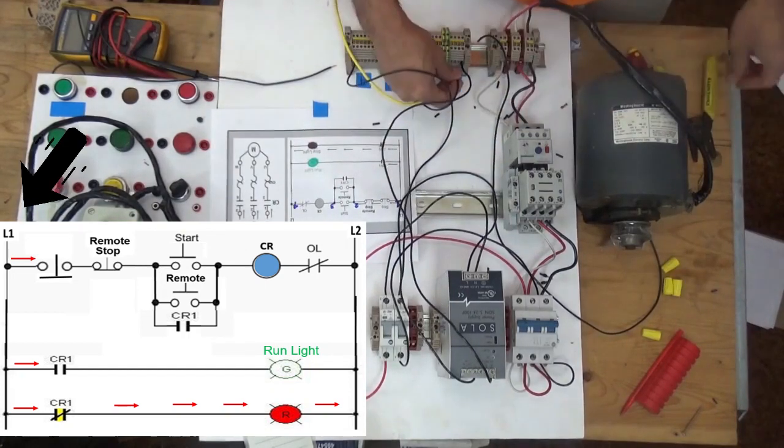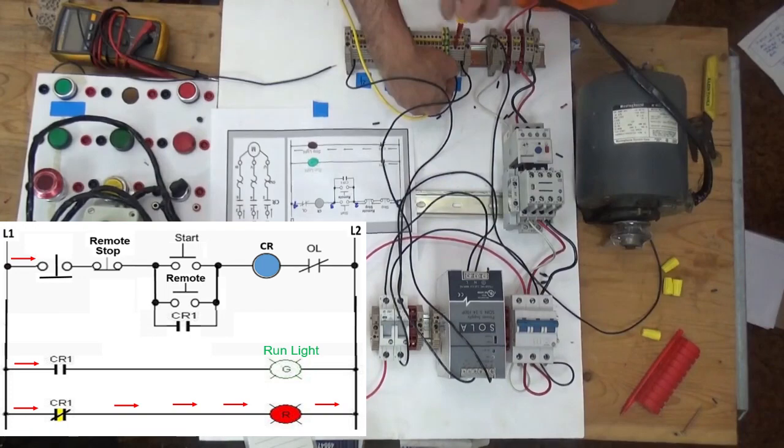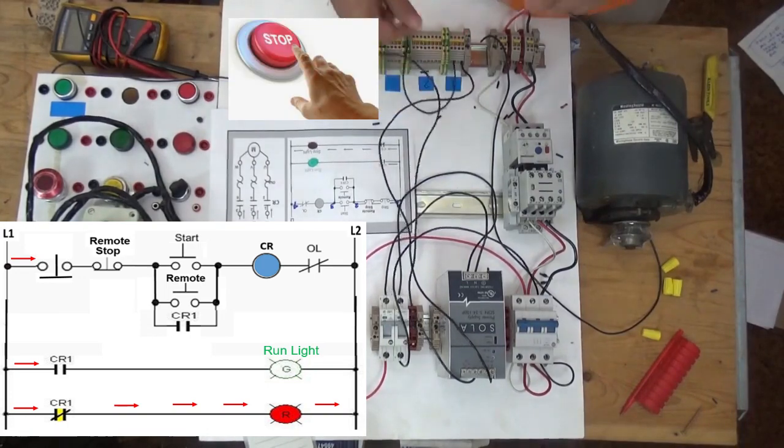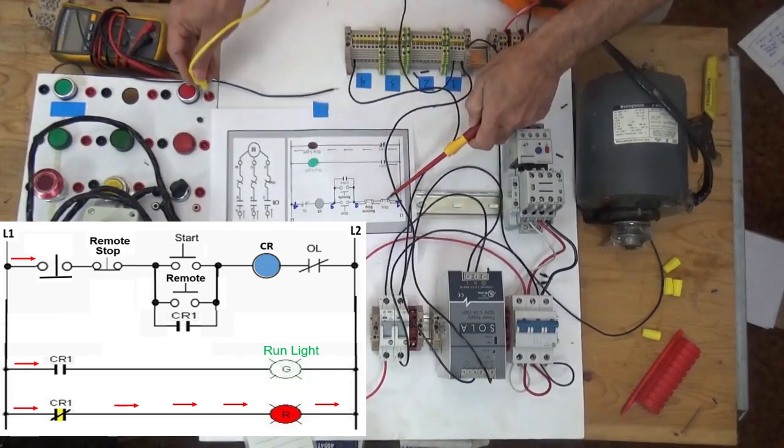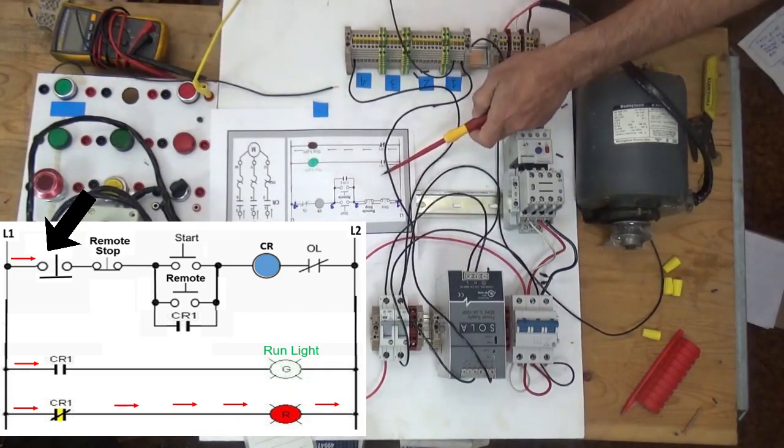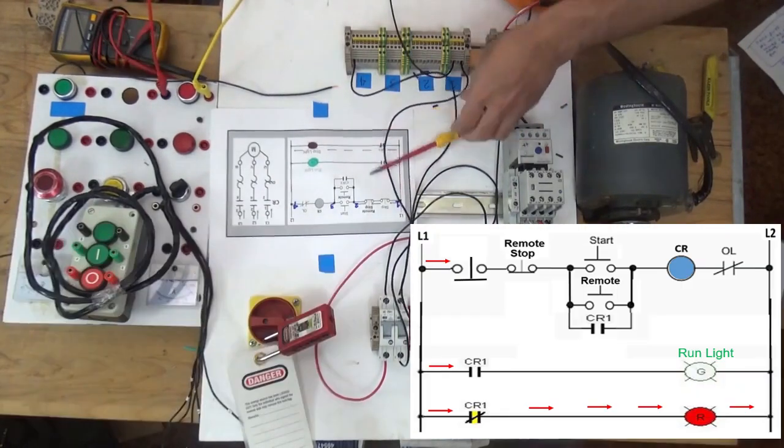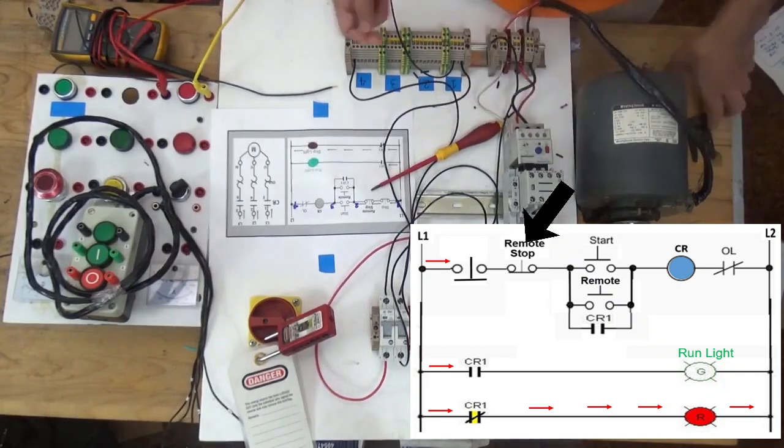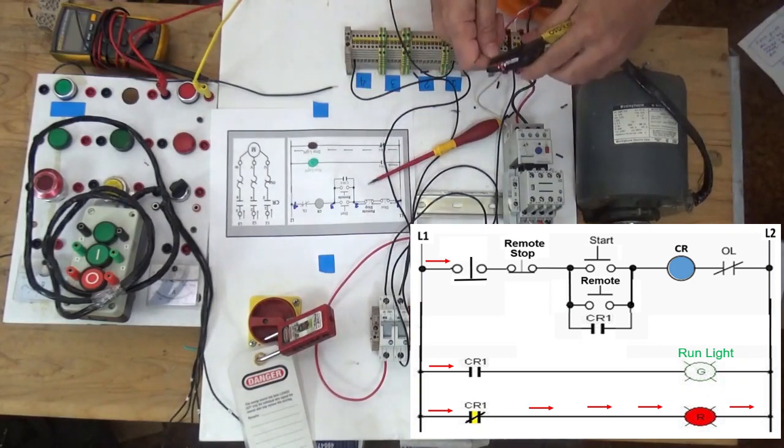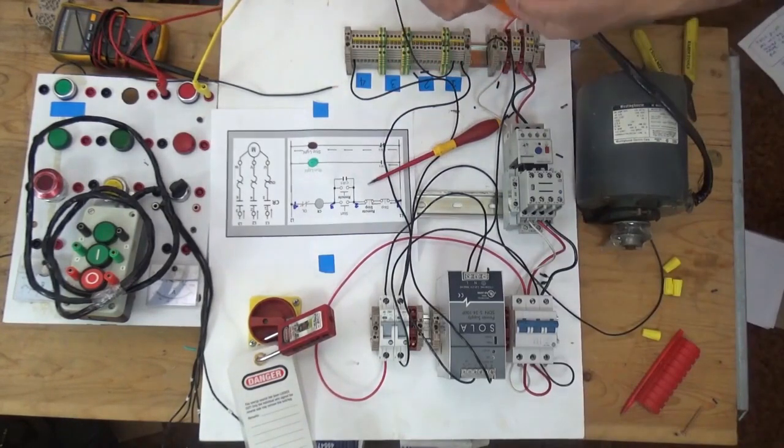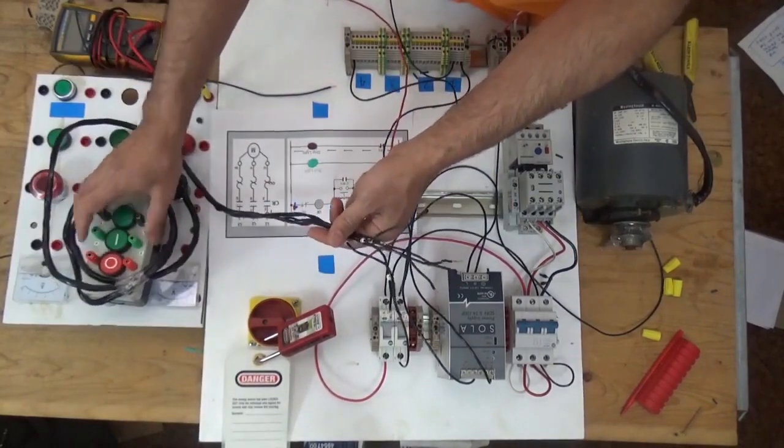So now we already have supply from our 24 volts power supply going to our terminal block. From line 1 here going to our stop push button here. Out of the stop push button going to remote stop push button. The remote stop push button is here.